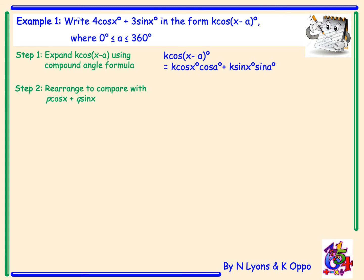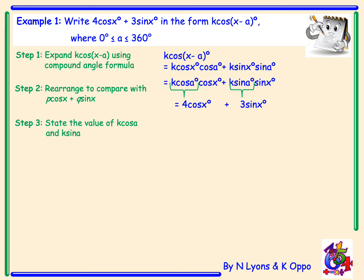Step 2: We rearrange in order to compare our coefficients with p cos x and q sin x. So we swap around the k cos x and cos a, and swap around the sin x and sin a. Writing 4 cos x plus 3 sin x underneath, we can clearly see the coefficient of cos x: k cos a is equal to 4. Step 3: Clearly state the values of k cos a and k sin a — k cos a is 4 and k sin a is 3.